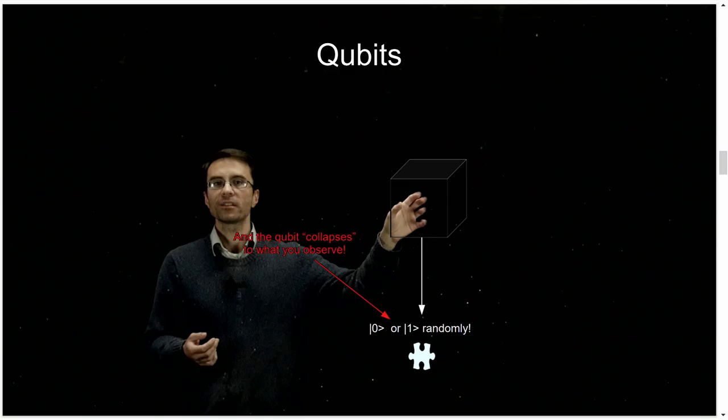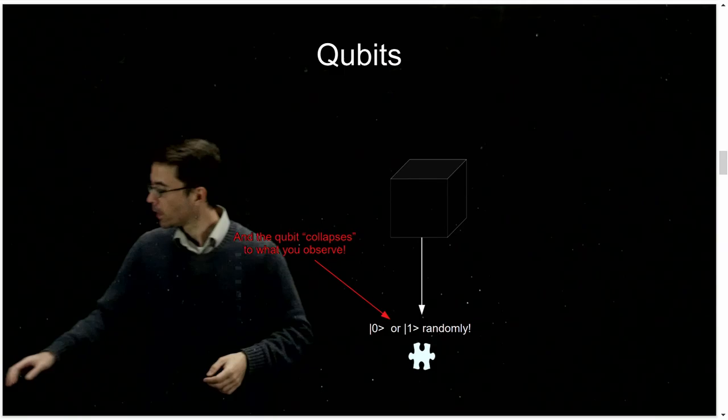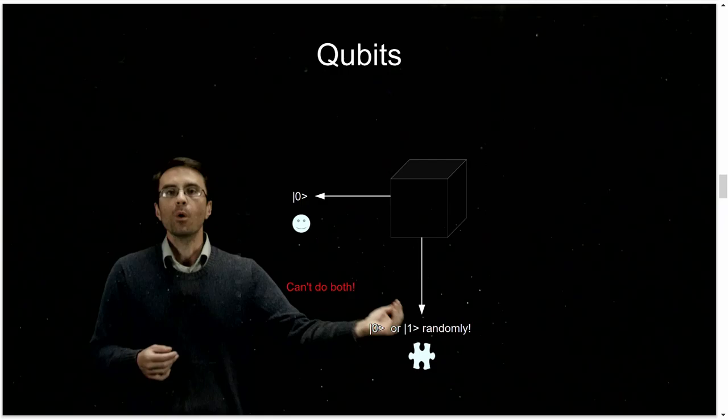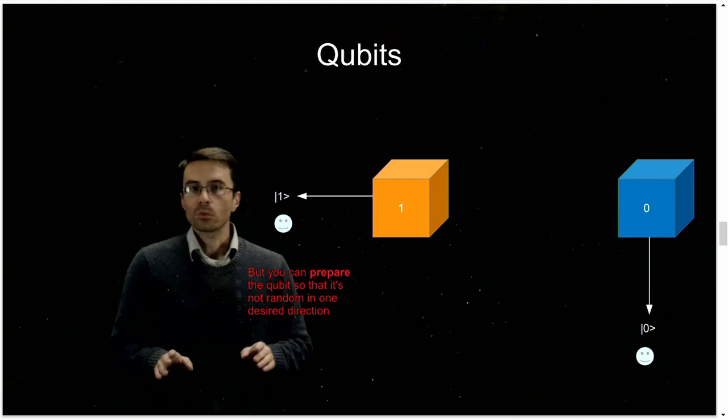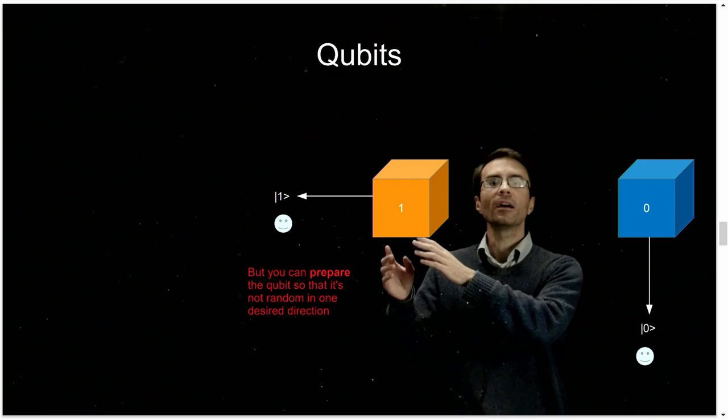Furthermore, once you look inside the box, the original thing is destroyed. Whatever was in the box originally is destroyed, and it becomes what you observe. So you only have one shot to look at this thing, and you have to do it right — because you can't look at both sides. Once you look from one angle, the thing is gone. You can't say, I'm going to look here and here. It's impossible to figure out what was in the box.